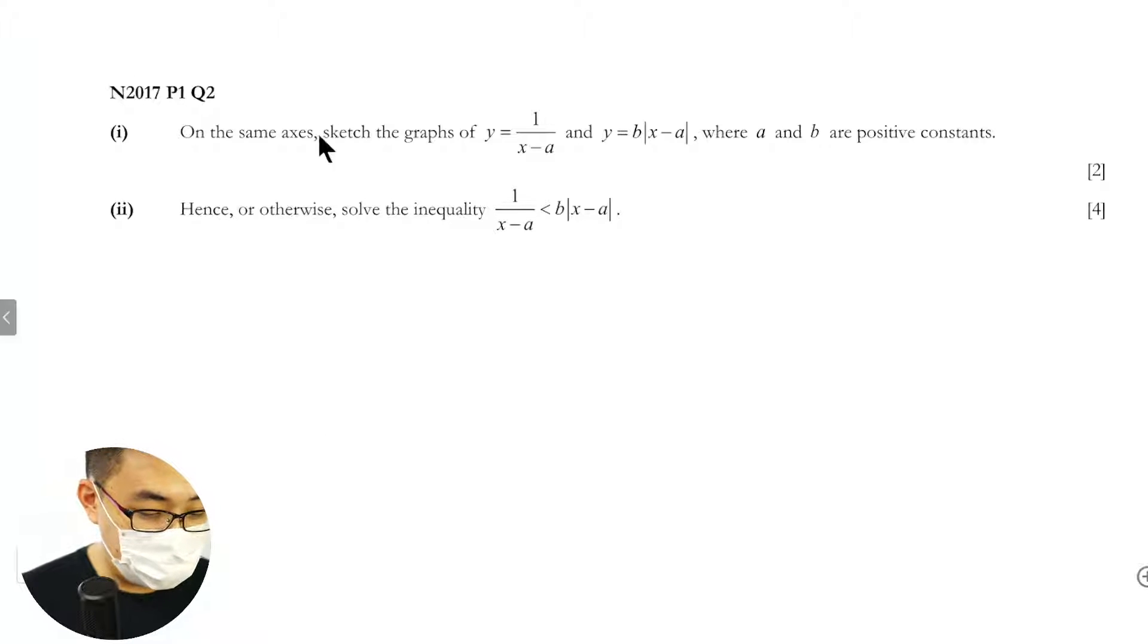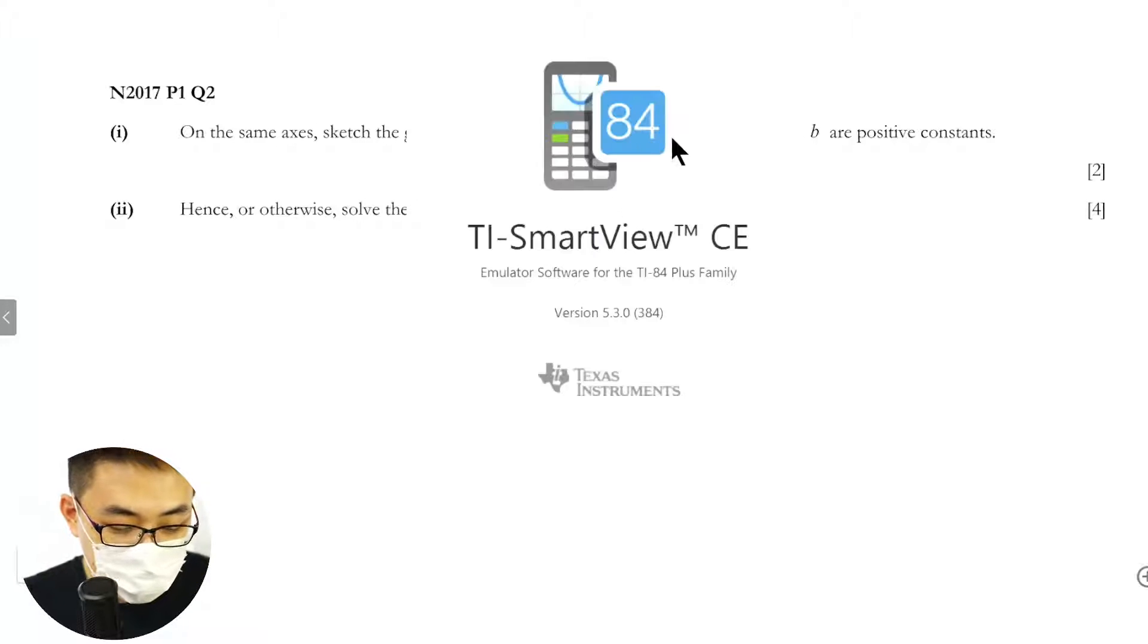I think this should be quite okay. On the same axis, sketch these two: y equals x over a and y equals b times the modulus of x minus a.